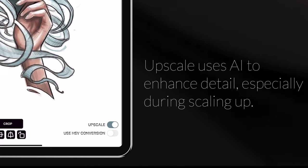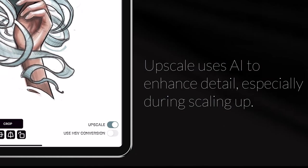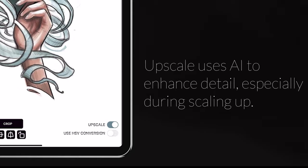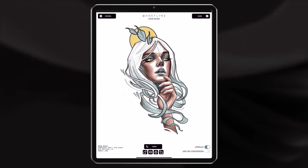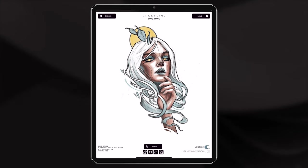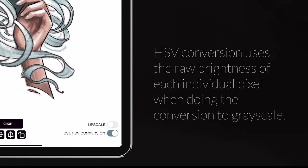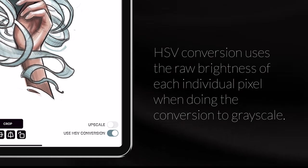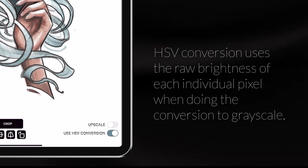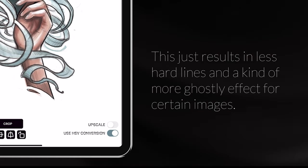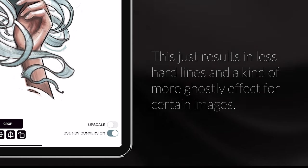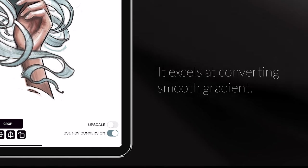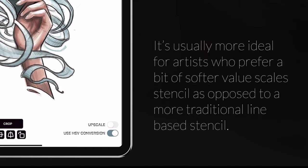Upscale enhances your photo and sharpens it — this is a really good function for if you have a blurry photo or if you just want to sharpen it a little more. HSV conversion uses the raw brightness of each individual pixel when doing the conversion to grayscale. This results in less hard lines and a more ghostly effect for certain images, and it excels at converting smooth gradients.